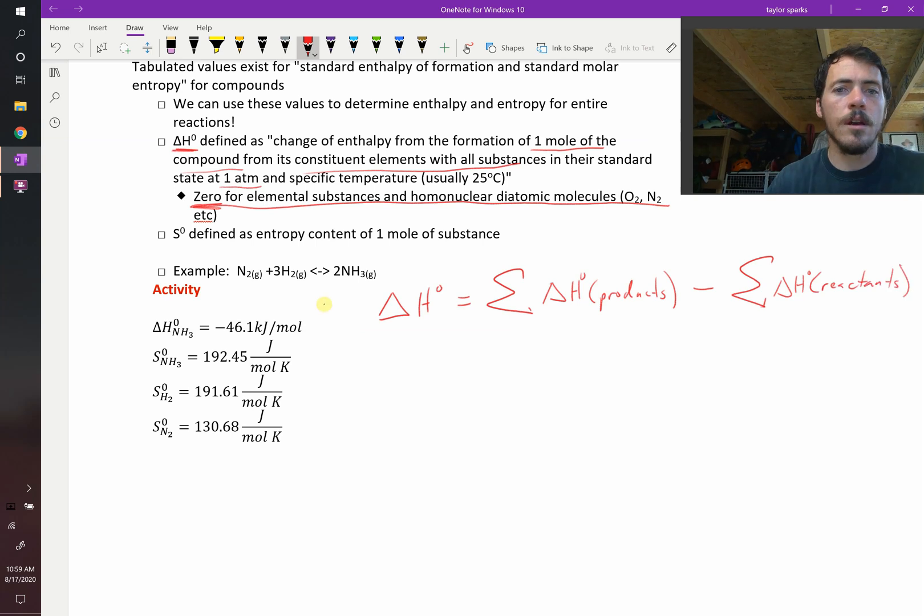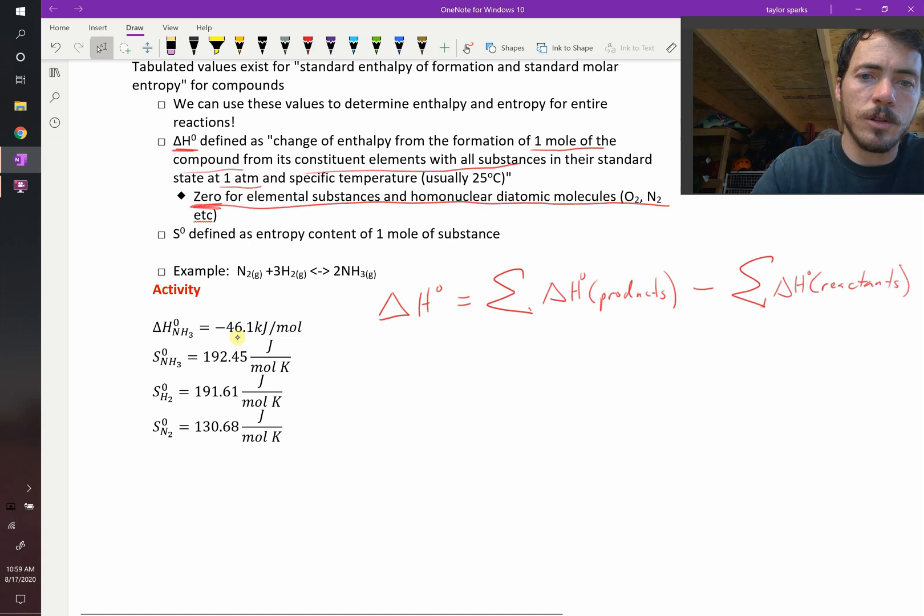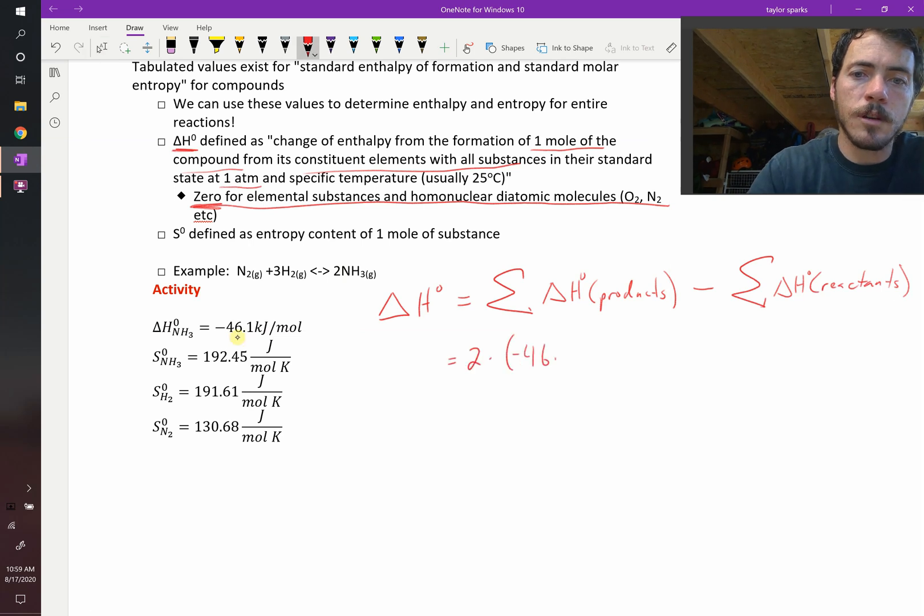So for us, our product is ammonia gas, and there's two moles of it, so we need to multiply two times the formation enthalpy for ammonia. So here's the formation enthalpy for ammonia. It's negative 46.1 kilojoules, so we're going to do two multiplied by negative 46.1 kilojoules per mole.